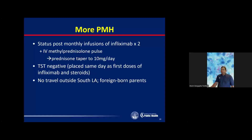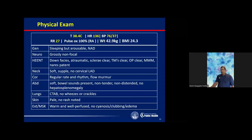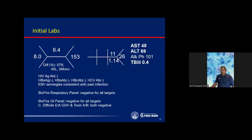The patient had no travel outside of South LA, but parents were known to be Mexican-born. Patient was noted to be tachycardic, febrile, a little bit hypotensive, and lethargic but arousable, with no other focal findings. Initial labs showed a little bit of AKI, some thrombocytopenia, anemia, and baseline LFTs looked okay.